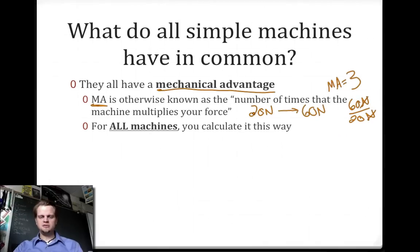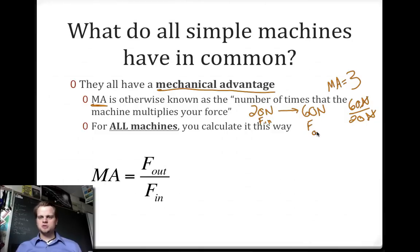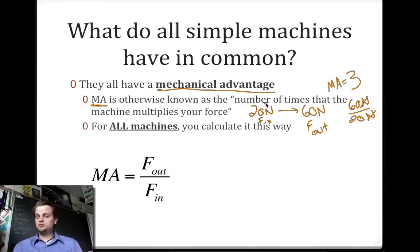For all machines, you calculate mechanical advantage the same way: it's the force out divided by the force in. In our example, the 20 newtons was the input force, or F-in, and the 60 newtons was the output force, or F-out. So all you do is take the force out and divide by the force in — it's really that simple.